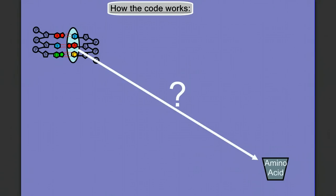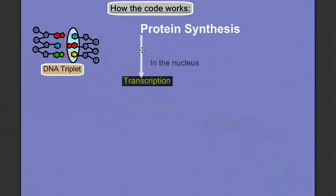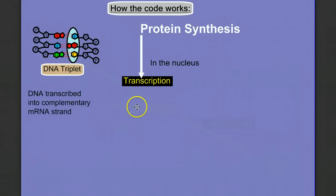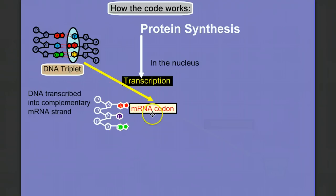We're going to run through protein synthesis in an overview, and then in later videos we'll look closer at the details of each step. The first step of protein synthesis is called transcription, and it occurs in the nucleus. During transcription, the DNA is transcribed into a complementary strand of messenger RNA. This DNA triplet is equivalent to an mRNA codon of three letters.